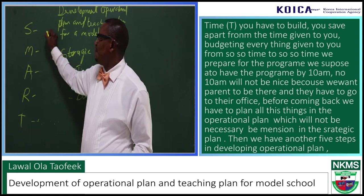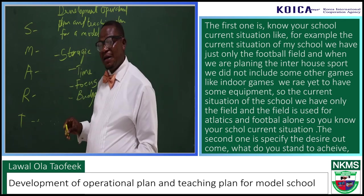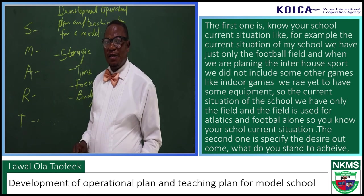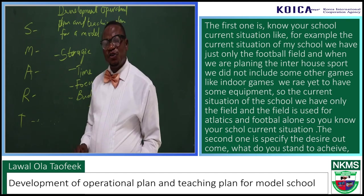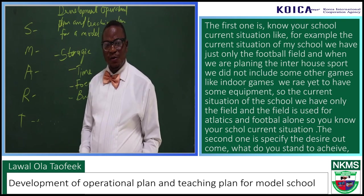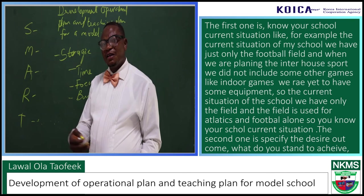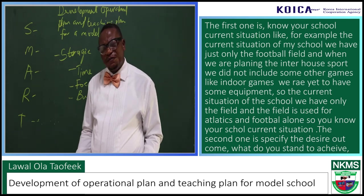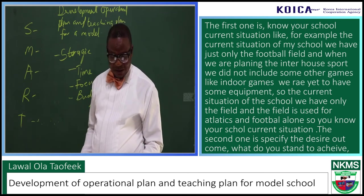There are five steps in developing an operational plan. The first one is to know your school's current situation. For example, the current situation of my school is that we have just the football field. When we were planning the inter-sport, we did not include indoor games because we are yet to have that equipment. So the field was used for athletics and football alone — you know your school's current situation.